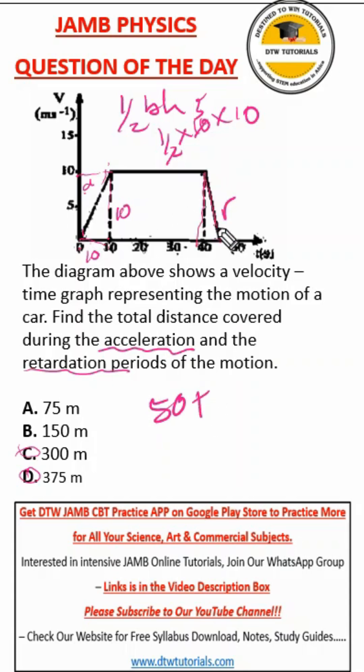Now, this is the second triangle for retardation. And we still use half base times height, area of a triangle. Now, what is the base here? The base is, if you can see, this line stops here. So it's like in the middle of 40 and 50. So this would be 45. So the distance from 40 to this 45 is 5.